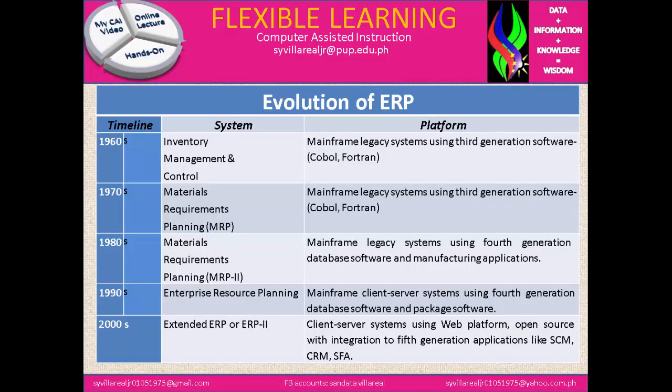Evolution of ERP in the timeline: in the 1960s, systems had inventory management and control, with the platform being the mainframe legacy system using 3rd generation software such as COBOL and FORTRAN. In the 1970s, under Material Requirements Planning, they also had the platform of mainframe legacy system using 3rd generation software COBOL and FORTRAN.